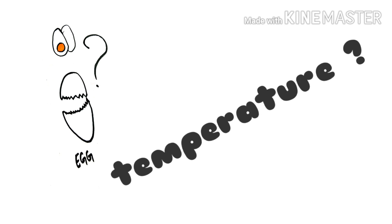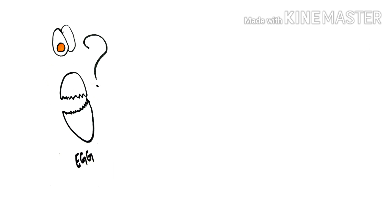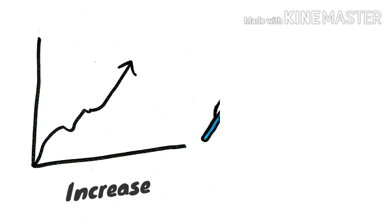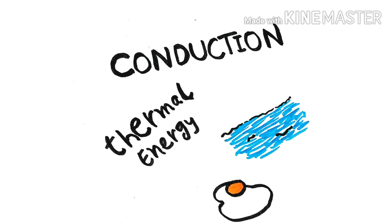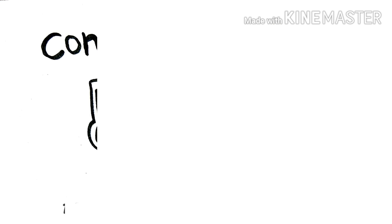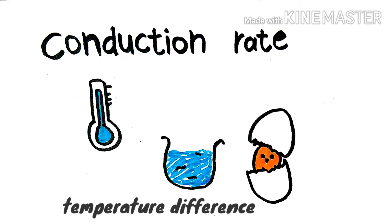In boiling the egg, the only way to increase the yolk temperature is by conduction of thermal energy from the water to the yolk. And the conduction rate depends on the temperature difference between the water and the interior of the egg.